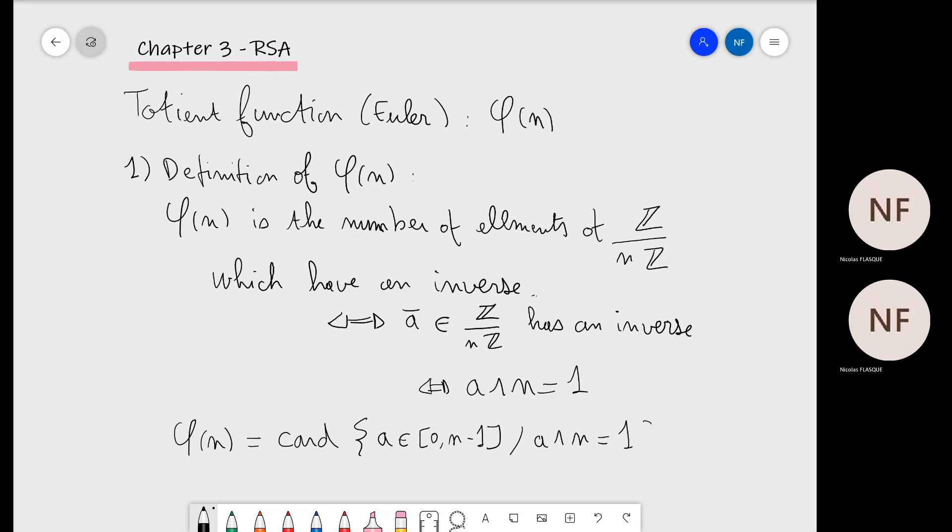...where the gcd of a and n is equal to one. It's a mathematical way of translating the fact that phi of n is the number of elements of Z over nZ which have an inverse.